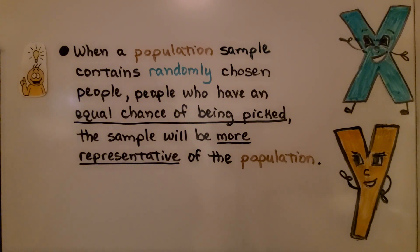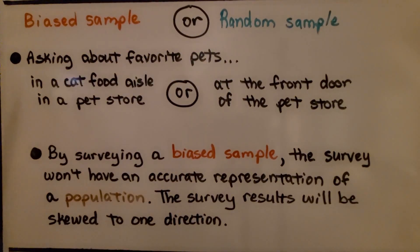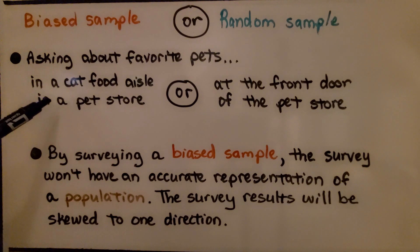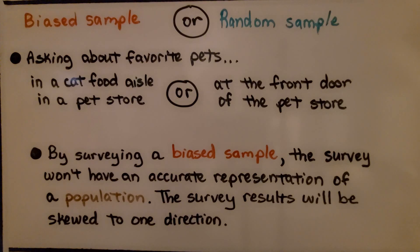When a population sample contains randomly chosen people — people who have an equal chance of being picked — the sample will be more representative of the population. Here's another example: asking about favorite pets in the cat food aisle of a pet store would be biased. Most people there are going to say they like cats — they're in the cat food aisle buying cat food. The random sample would be standing at the front door of the pet store and asking people as they enter, since you don't know what type of pet they have. By surveying a biased sample, the survey won't have an accurate representation of a population, and the results will be skewed in one direction.